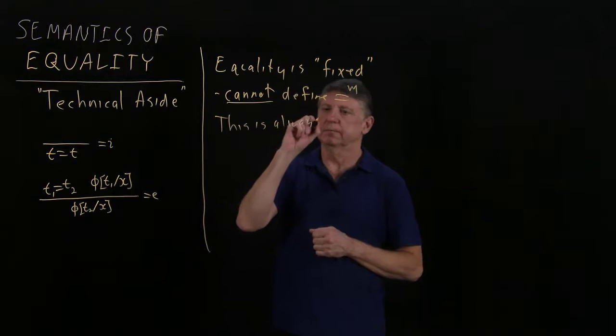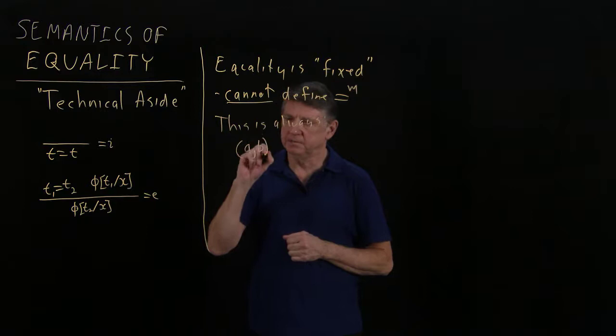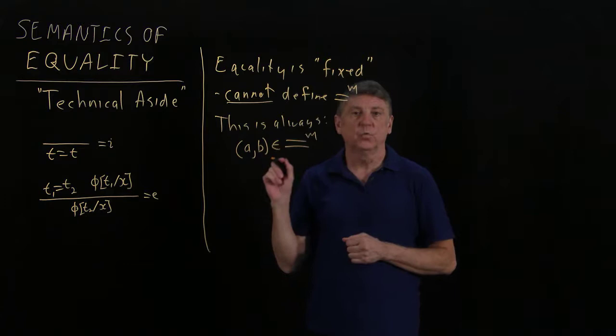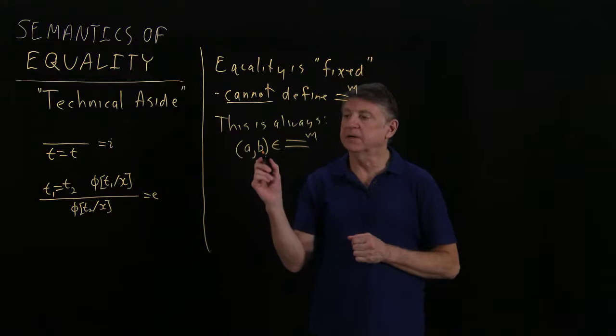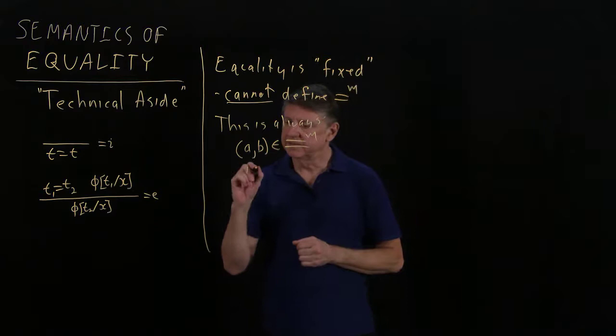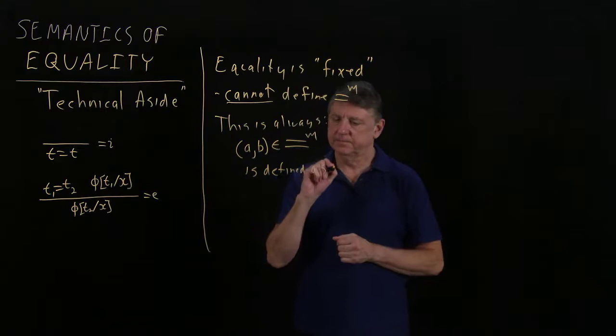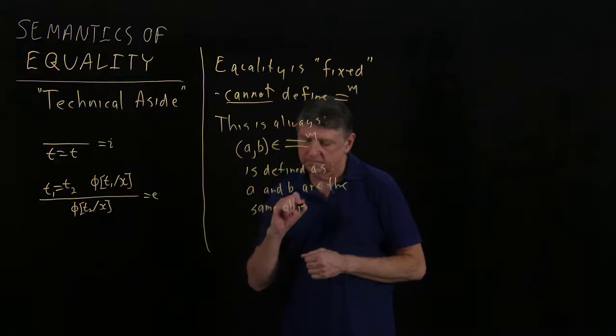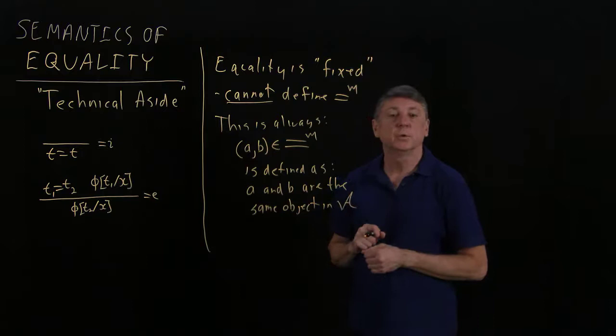So this is always, we'll say that a pair of objects, a, b, are in the set of equality. So let's recall that what that means is that a equals b. The way that we represent that in our meta logic is that that ordered pair is in a set. And the set that we're looking at is the set of equality in our model. And that this will define intentionally. And that is, this is defined as a and b are the same object in the non-empty universe of discourse that we're writing as a script a.